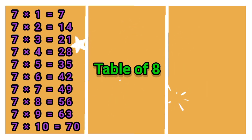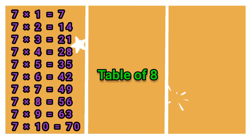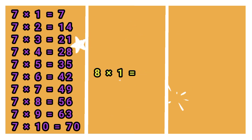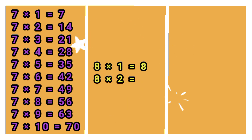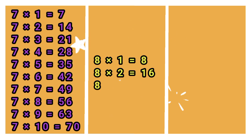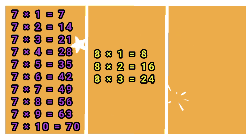Multiplication Table of 8. 8 times 1 jah 8. 8 times 2 jah 16. 8 times 3 jah 24. 8 times 4 jah 32.